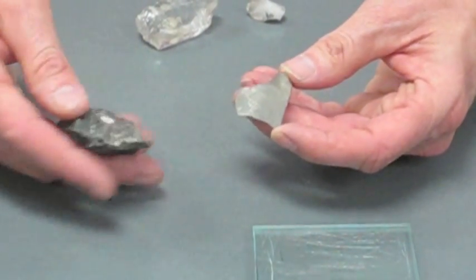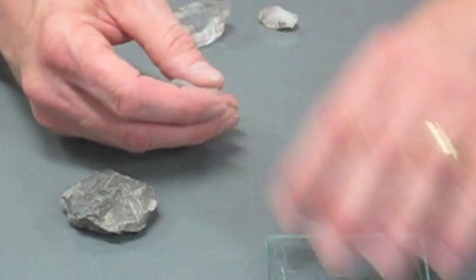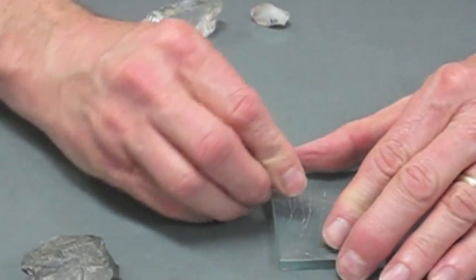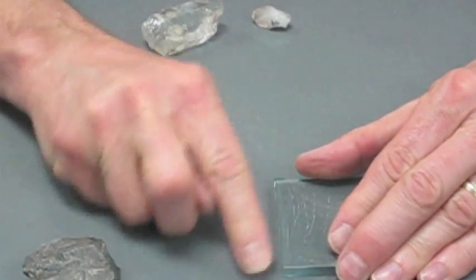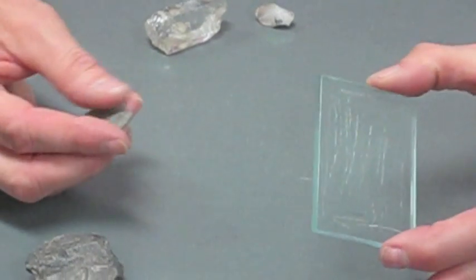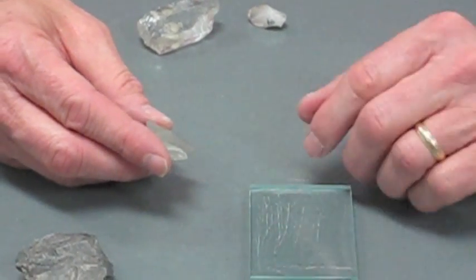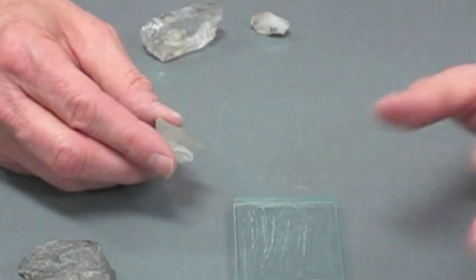This is gray. This one's darker or black. It's still quartz, so it should scratch glass and give us a scratch on a glass plate, so it's easy to test for. It can be white or red, so the colors aren't very distinctive.